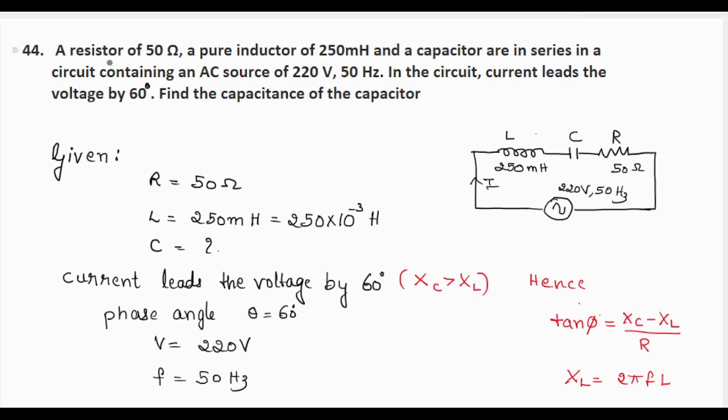This question is taken from the physics model paper 3 of 2024-25, question number 44. A resistor of 50 ohms, a pure inductor of 250 millihenry, and a capacitor are in series in a circuit containing an AC source of 220 volts, 50 hertz. In the circuit, current leads the voltage by 60 degrees. Find the capacitance of the capacitor.